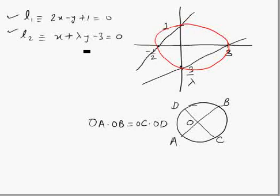the second line is intersecting x-axis at three comma zero and y-axis at three by lambda. Now it is given in the question that all these four points are concyclic. The intersection of these two lines with coordinate axes are concyclic and we have to find the value of lambda.